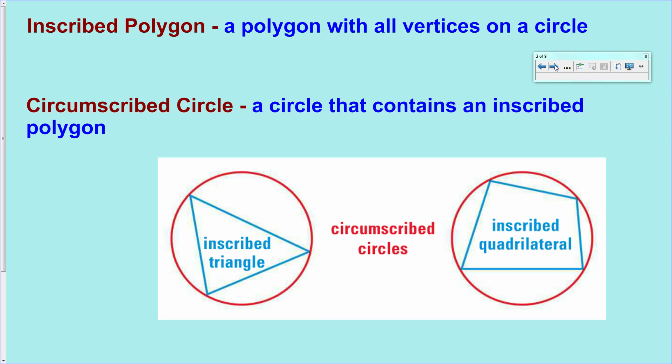Two more vocab words: inscribed polygon and circumscribed circle. An inscribed polygon is any polygon that is drawn so that all of its vertices are directly on top of the circle. A circumscribed circle is a circle that contains at least one inscribed polygon.